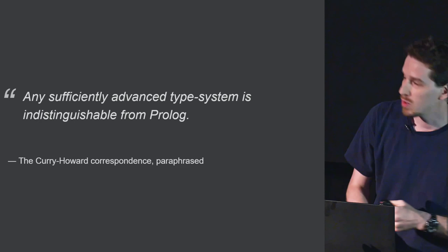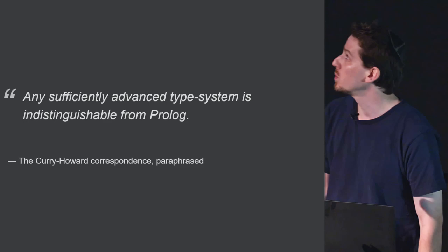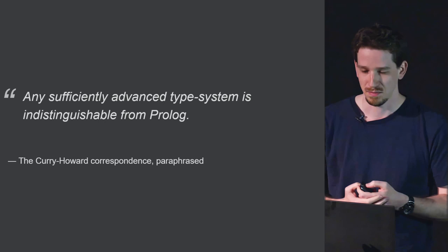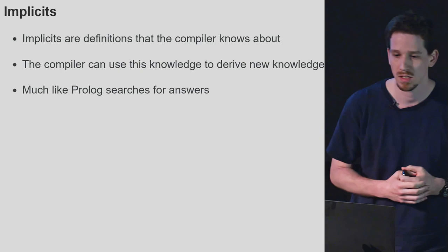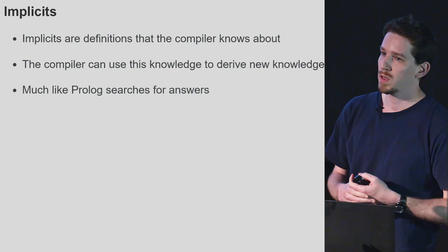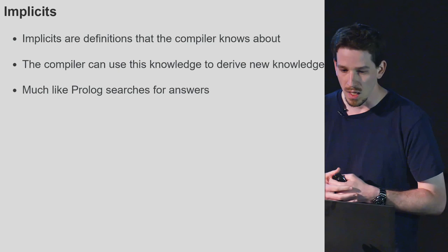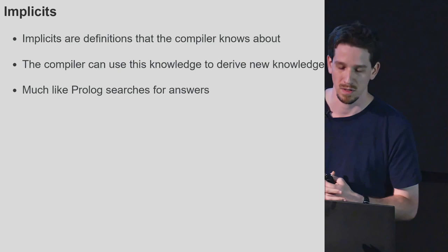My aim now is to show how similar Scala's type system is to Prolog — specifically how programming with implicits is not so different from programming in Prolog. The connection between type systems and logic is very, very deep. When we declare something in Scala as implicit, it becomes known to the compiler. When we ask the compiler to resolve something implicitly for us, it will search at compile time through all the implicitly known definitions and try to derive a value of the correct type for us. This should sound familiar, since it's pretty much the way Prolog works.